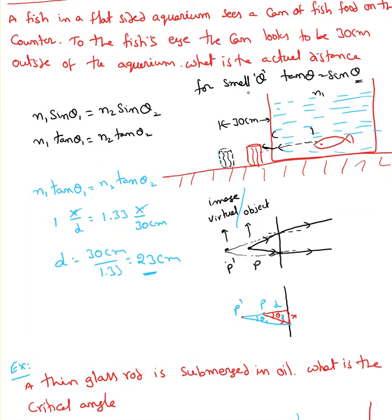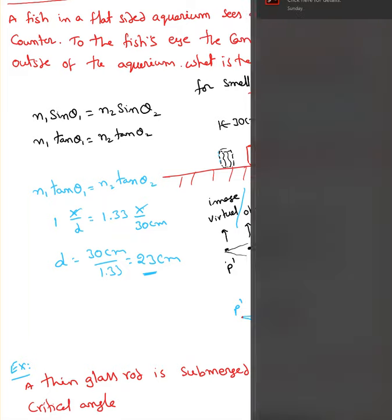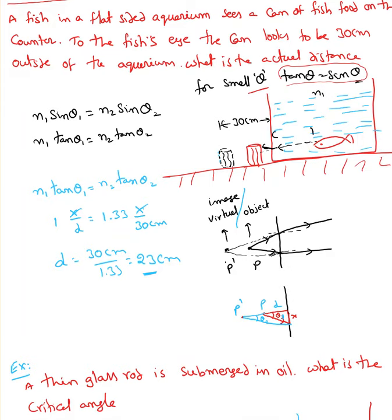For small theta, tan theta is always equal to sine theta, and I'm going to use this approximation. If you look at the diagram, the light rays — this is the apparent image, and that's the real image in red color. That's the real can, but for the fish it looks like it is 30 centimeters away.